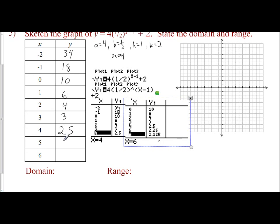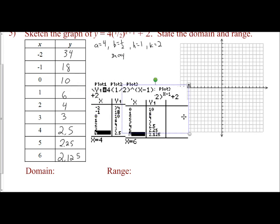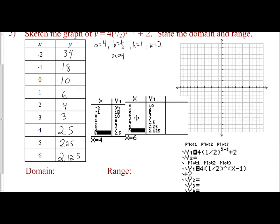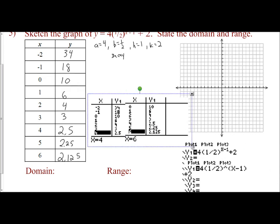Then I'm going to scroll down so I can see my 5 and 6 values. For 5, I have 2.25. And for 6, I have 2.125. So I have my table of values. I even showed you how to input it using the two different operating systems. Here are my table of values, copied from my calculator.